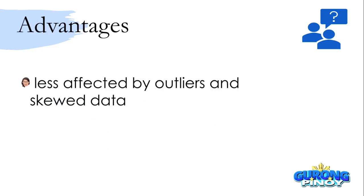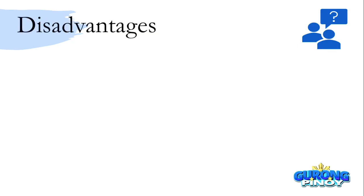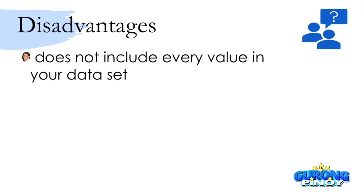What are some advantages of using the median? Unlike the mean, the median is less affected by outliers and skewed data. In our example, the mean was very much affected by the 90,000 and 95,000 salaries, but our median was just 15,500 — the outliers did not really affect it. Now, the disadvantage of the median is that it does not include every value in your data set. Unlike the mean where we added all the data values, the median only takes the middlemost score, so it does not really include every value.